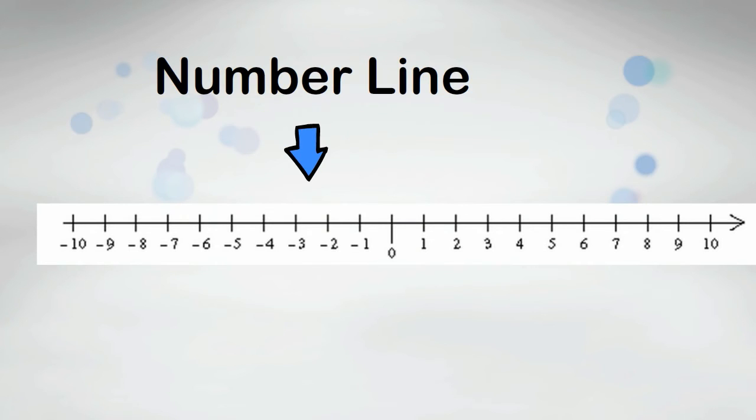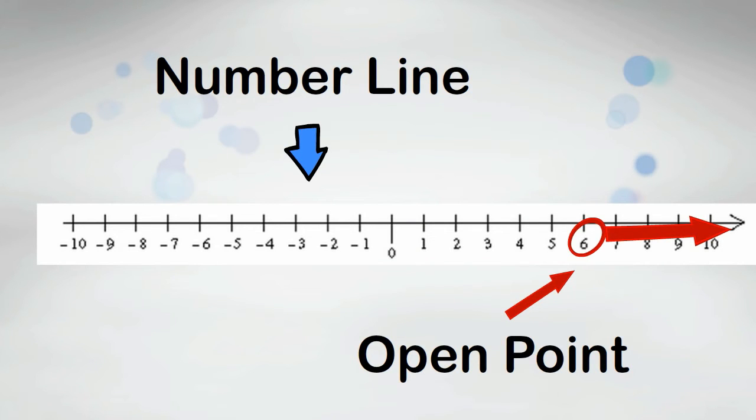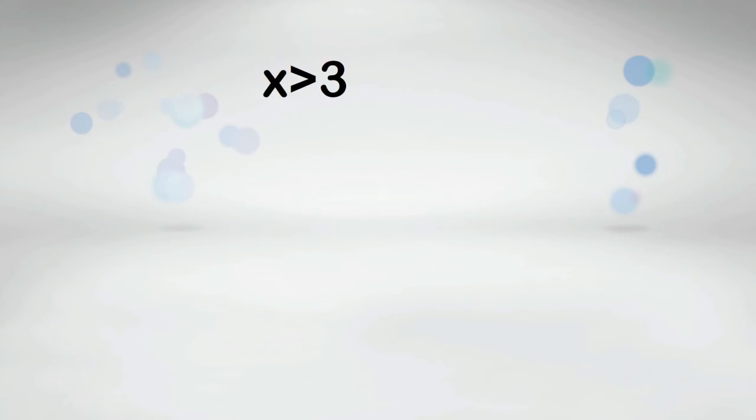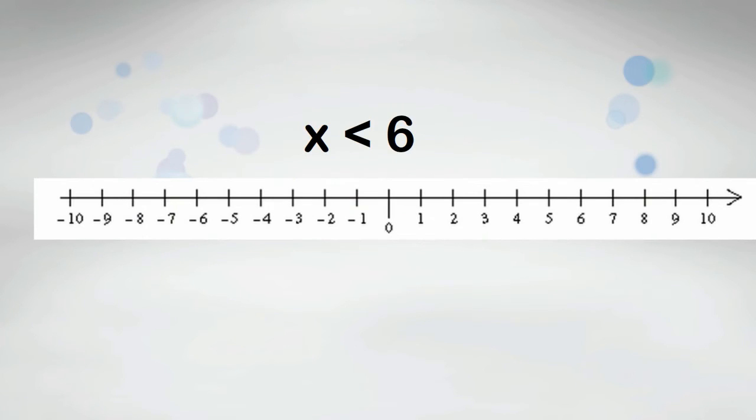On a number line, if you have an open point it means the number is not included in the solution. For example, x is greater than 3. Notice that you use an open point because 3 is not included. x is less than 6, again an open point is used.